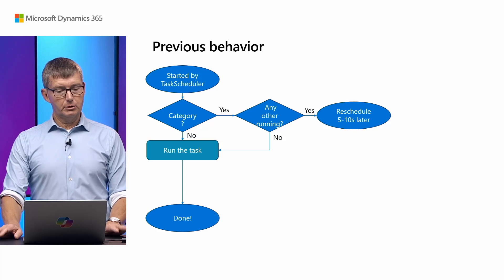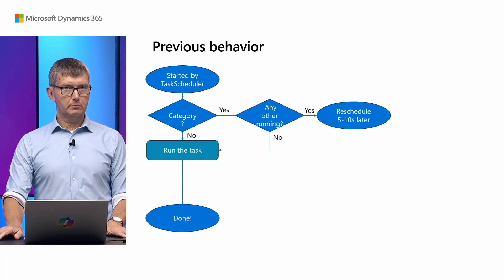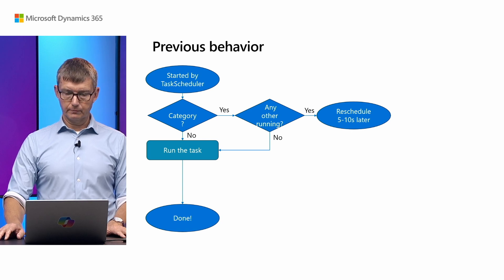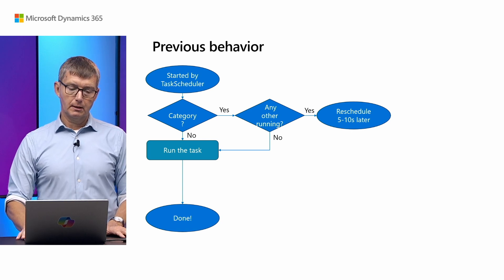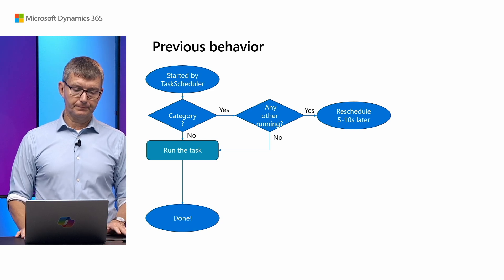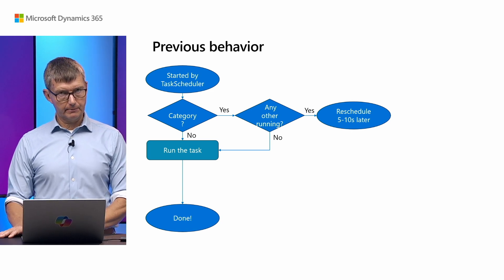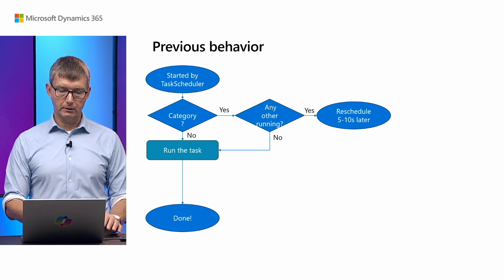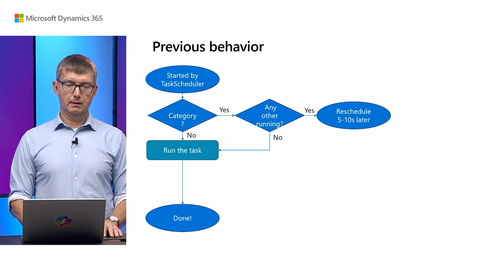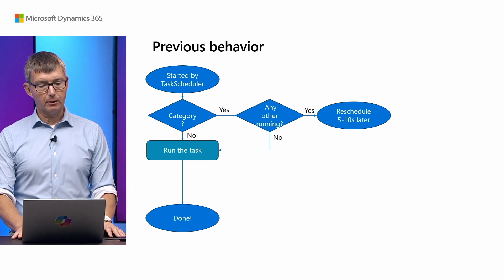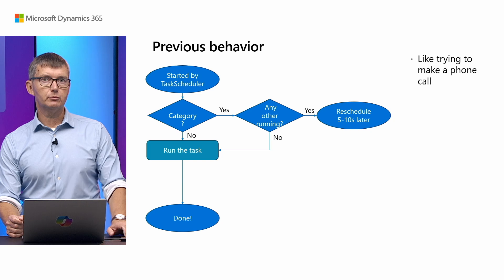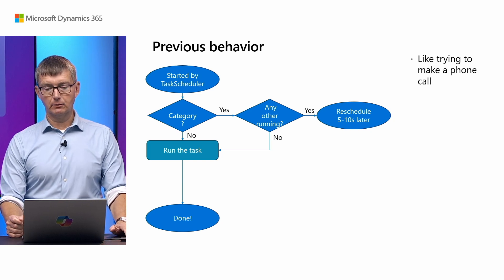So how did it work before? The job starts and the first thing we do is check whether it has a category code. If no, we just run the task and we're done. If yes, we check whether anyone else with the same category is running. If no, we run and we're done. Otherwise, we figuratively hang up and try again later — just like when you try to call the pizza delivery or the doctor: if it's busy, you try again later.